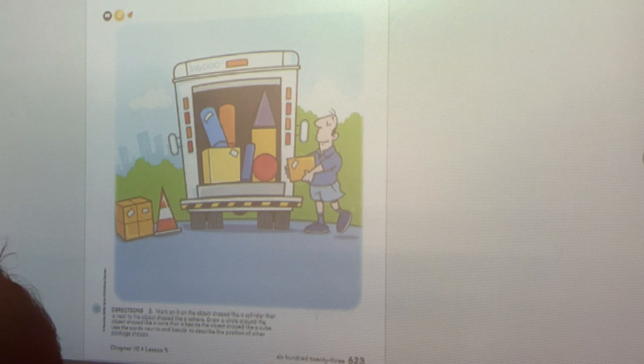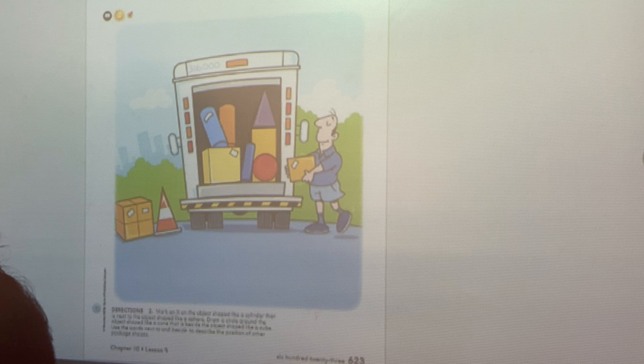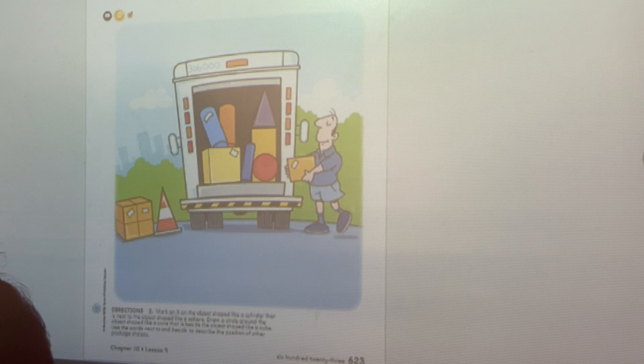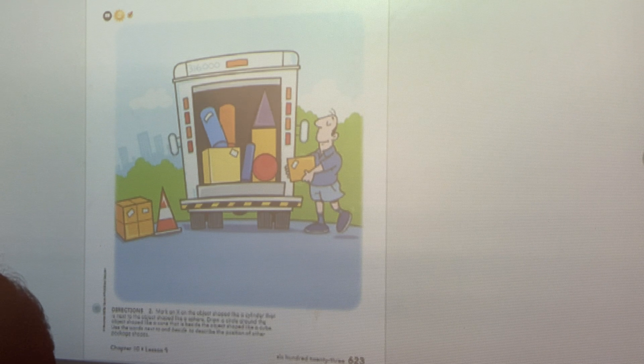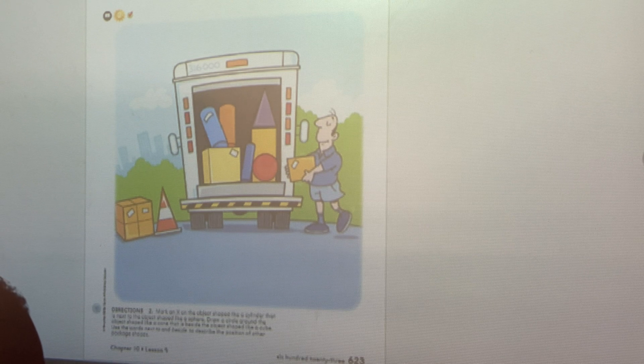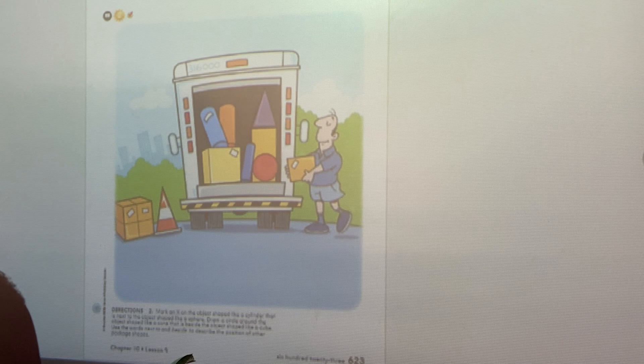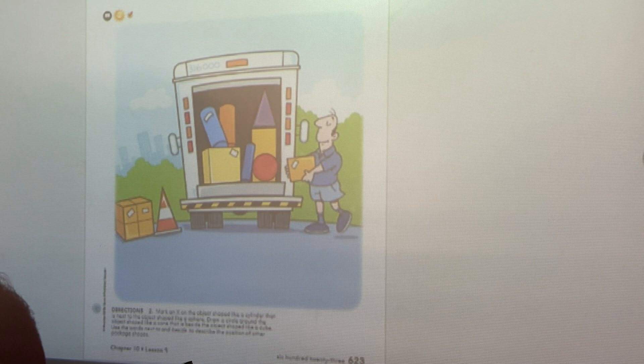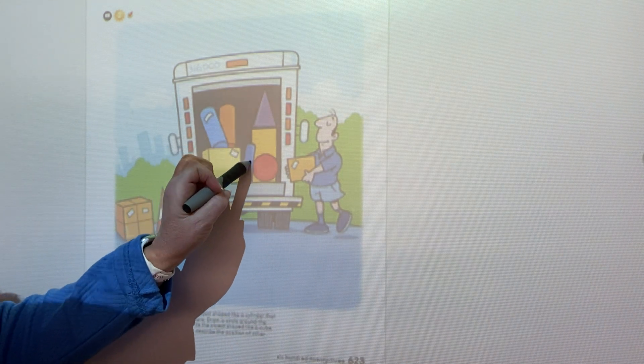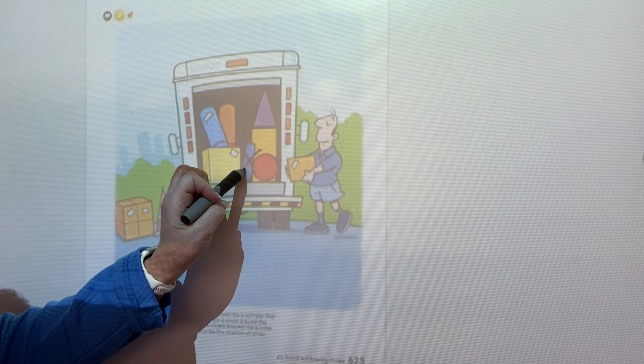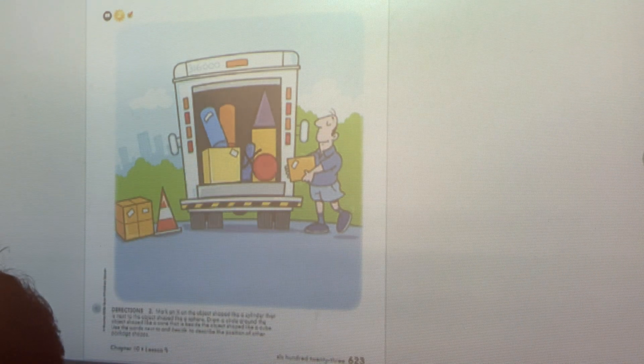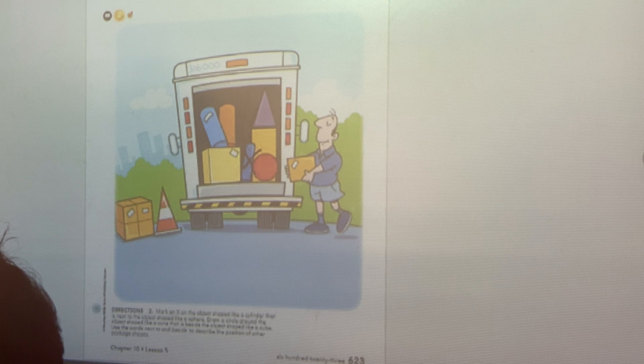I want you to mark an X on the object that is shaped like a cylinder, but it has to be next to a sphere. Can you see the cylinder that is next to a sphere? Right here, this blue one. It is next to the red sphere.